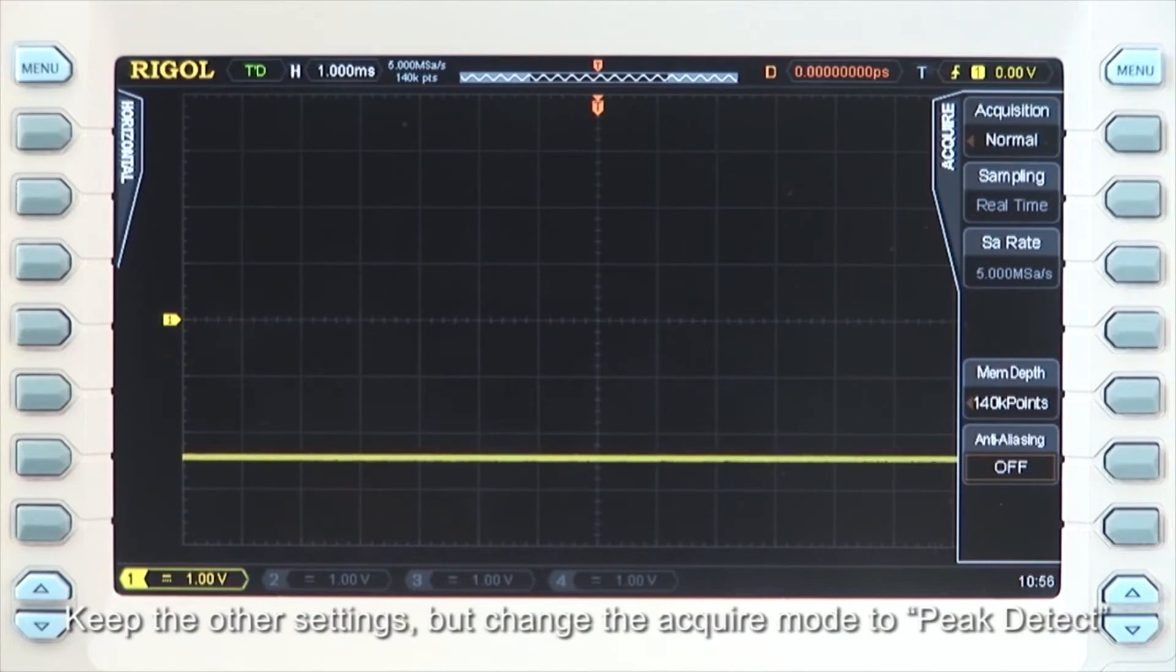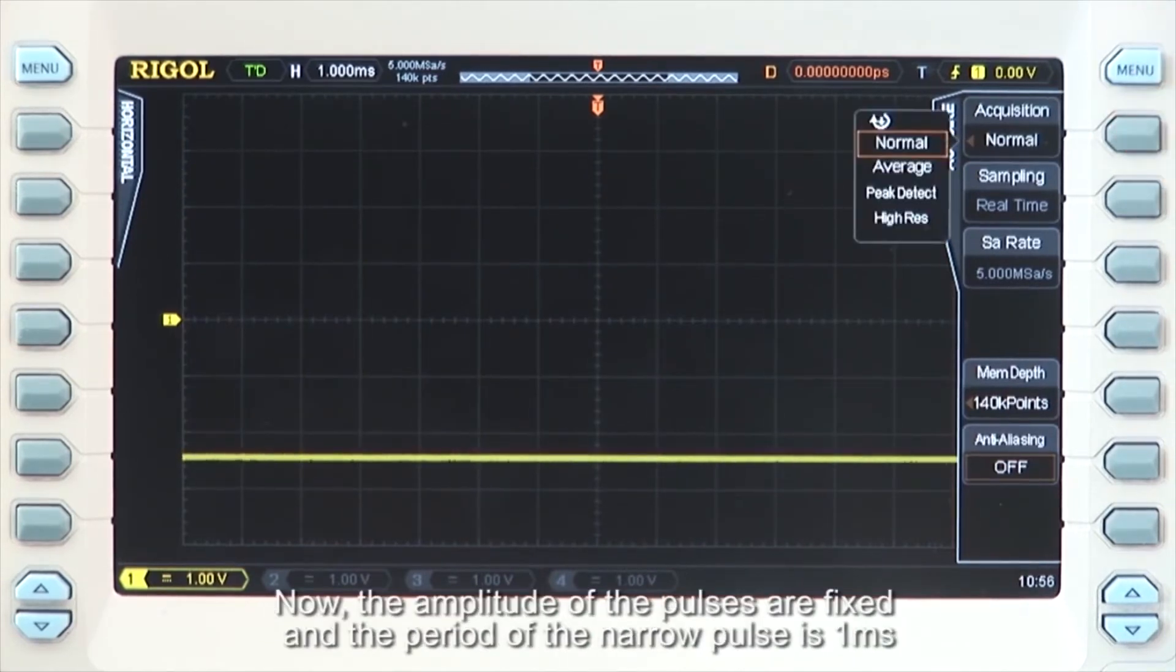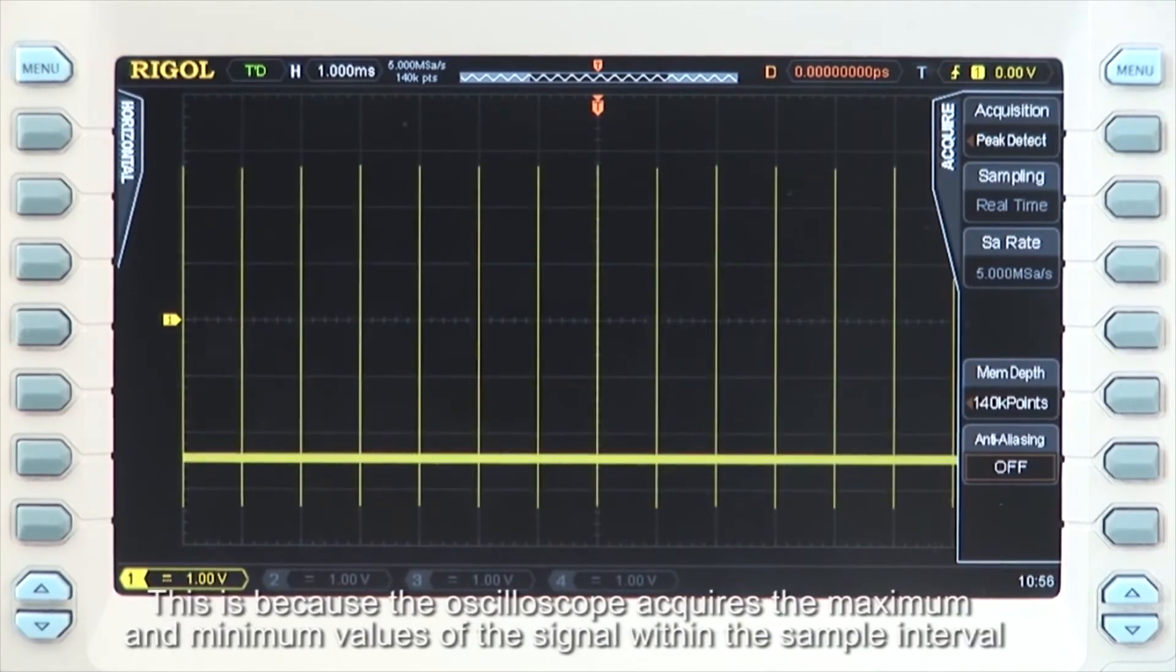Keep the other settings but change the acquire mode to peak detect. Now the amplitude of the pulses are fixed and the period of the narrow pulse is 1 millisecond. This is because the oscilloscope acquires the maximum and minimum values of the signal within the sample interval.